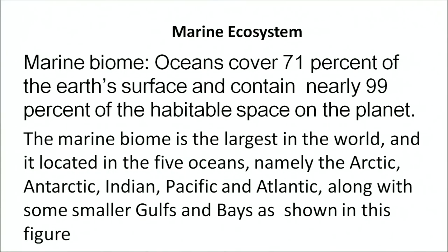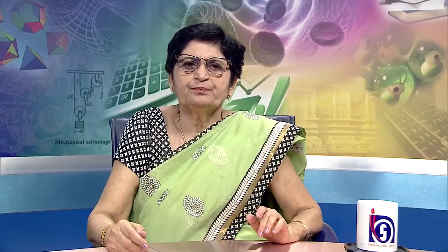The marine biome covers nearly 71% of the earth's surface and contains nearly 99% of the habitable space on the planet. It is the largest biome in the world and is located in five oceans: the Arctic, Antarctic, Indian, Pacific and Atlantic, along with some smaller gulfs and bays. The marine biome can be divided into three zones: the intertidal zone, open ocean and the abyssal zone.